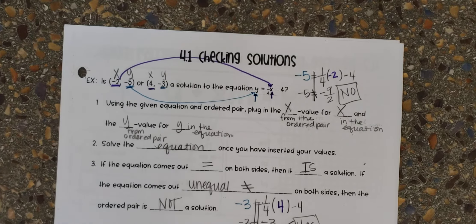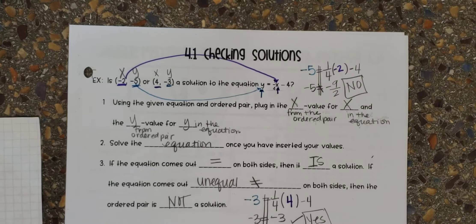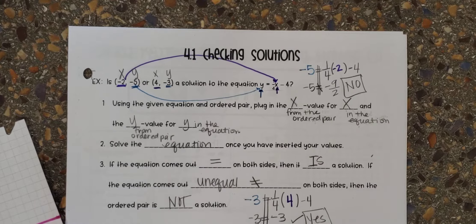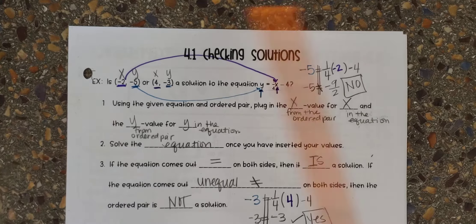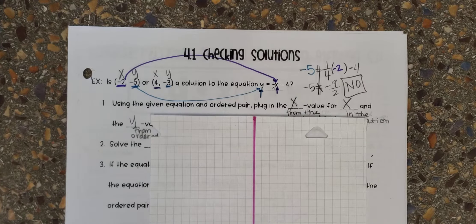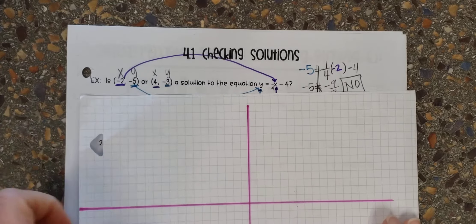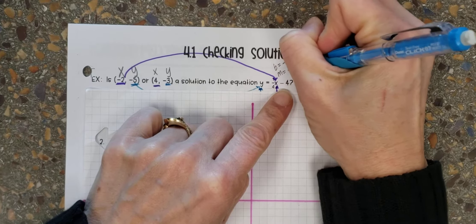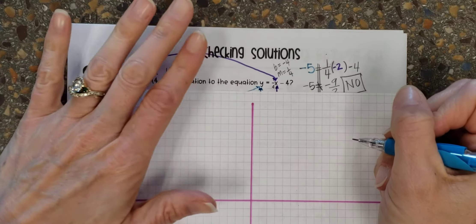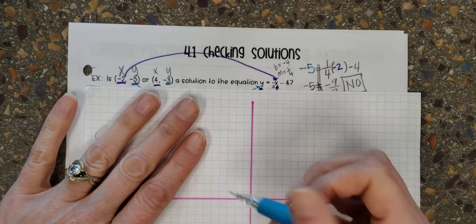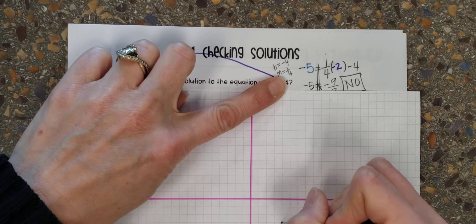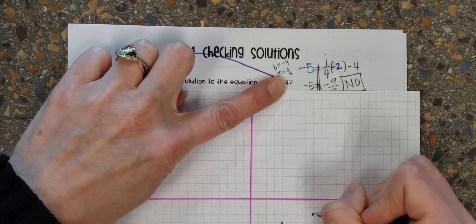To explain what this means: if I graph this equation on a coordinate plane — like we practiced last class — the ordered pair that is a solution will fall on the graphed line, and the one that's not a solution will not. I'll graph it now: the Y-intercept is -4 and the slope is one-fourth. Starting at -4 on the Y-axis, I go up 1, right 4, repeatedly to draw the line.